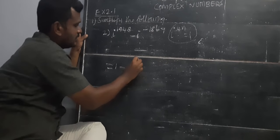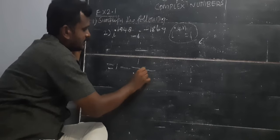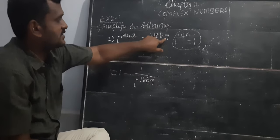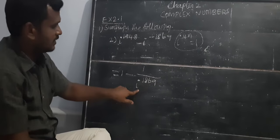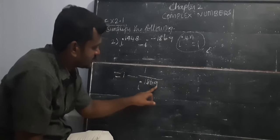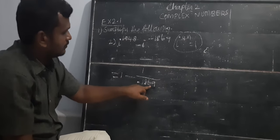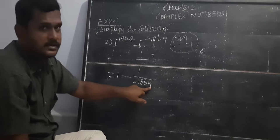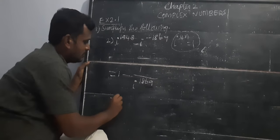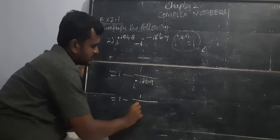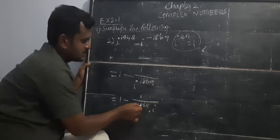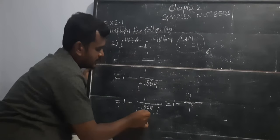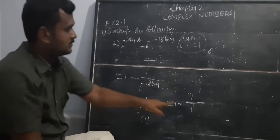We can't directly find the value of i power minus 1869, so we change it to 1 minus 1 over i power 1869. Now we look at the last two digits 69: 15 fours are 60, 16 fours are 64, 17 fours are 68. So we take 17 fours are 68. Therefore 1 minus 1 over i power 1868 times i. This value becomes 1, so we get 1 minus 1 over i.